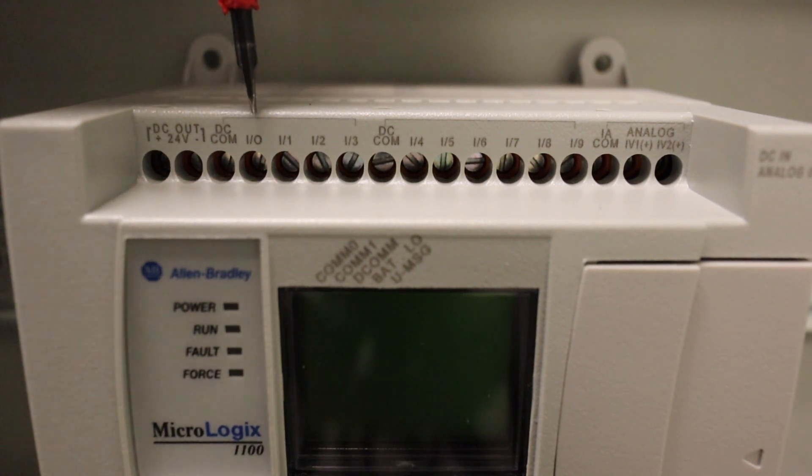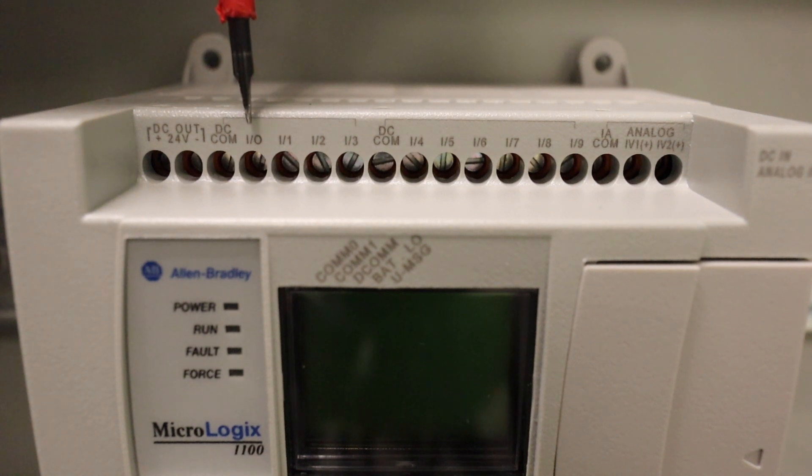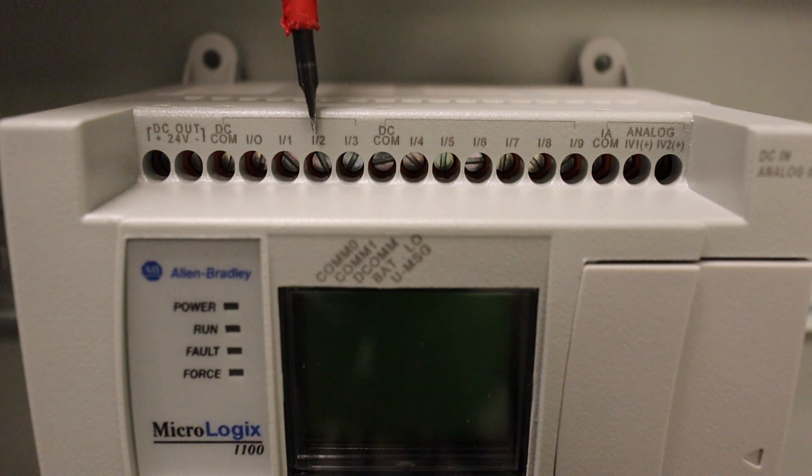So back to what I was saying though, you're going to hook up your DC common here. This is an input. This is our first one, and this one's like I:0/0. And that's the way they're numbered. This one's going to be I:0/1, I:0/2 on down.